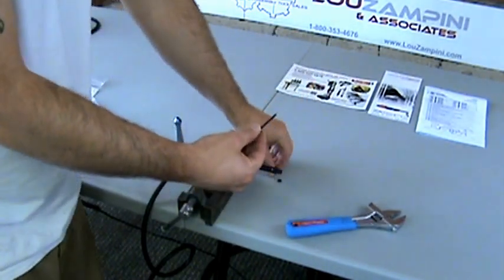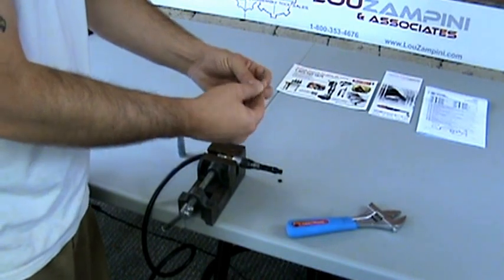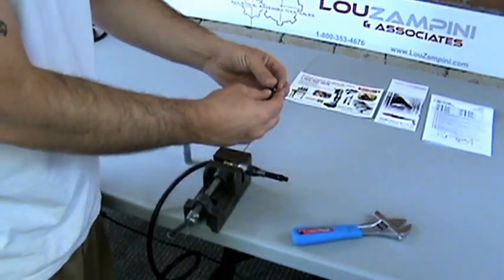Take my new stylus, put my two new O-rings right over it, just slide them all the way down. Very simple.